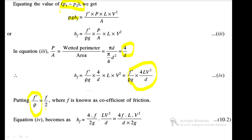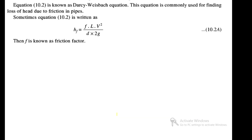Setting f'/ρ = f/2, where f is the coefficient of friction, the equation becomes HF = 4·f·L·V² / (2·g·D). This is the final result: head loss due to friction HF equals 4fLV² divided by 2gD.